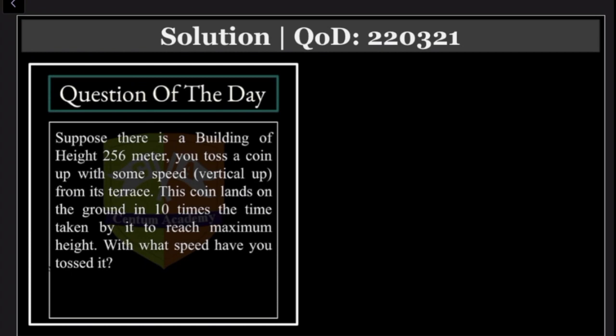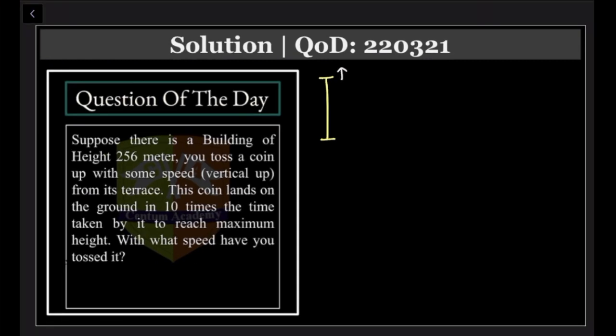Congratulations that we have that high building. You toss a coin up with some speed vertically from the terrace. This coin lands on the ground in 10 times the time taken by it to reach maximum height. With what speed have you tossed it? Understand the scenario.